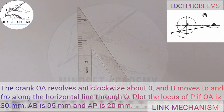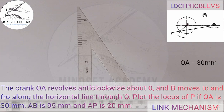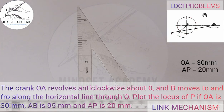This question involves link mechanism. The first thing you have to do is reproduce the figure displayed on the right-hand side of the screen. The three most important things to write are the parameters. OA is the crank — the radius of the crank — given to be 30mm. As this crank rotates anti-clockwise, AB is 95mm, which is the connecting rod. AB moves to and fro along the horizontal line through O.